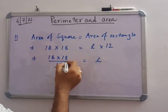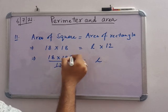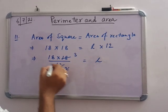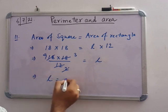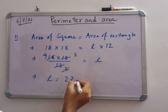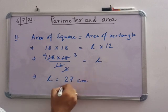So 80 into 80 by 12 equals L. If we divide by 2, we get 6, 3, 2, this is 9. So L equals 27 centimeter. Note it down.